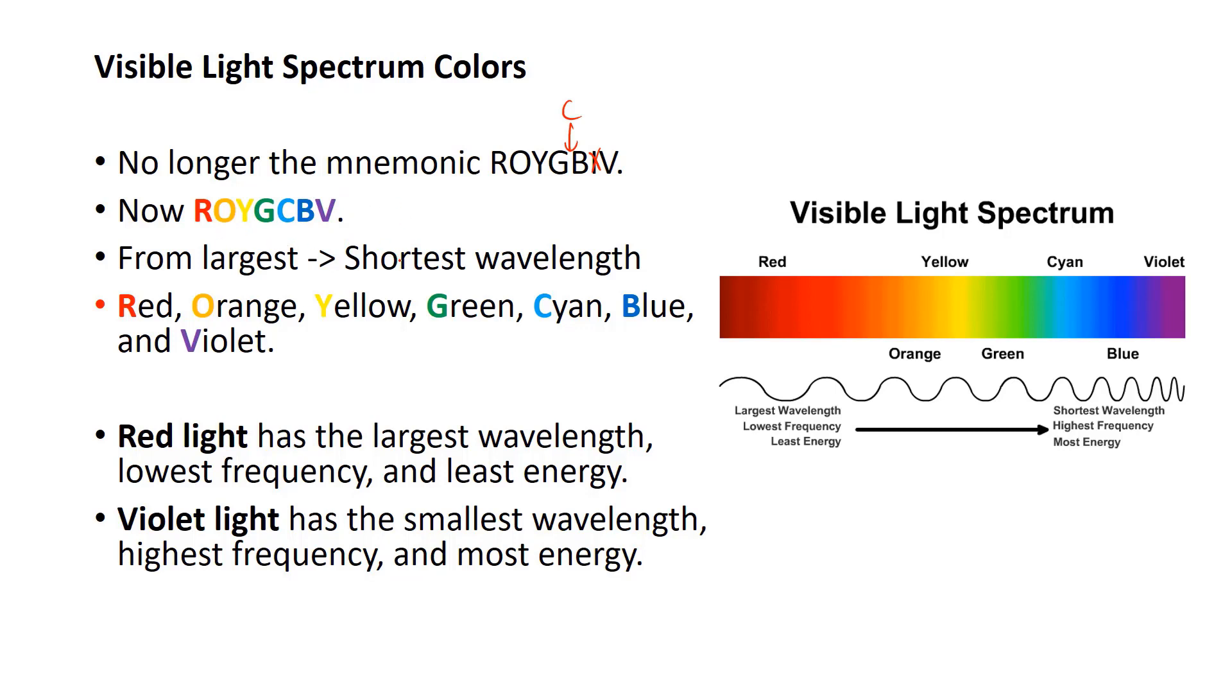And this goes from largest to shortest wavelength. So you get red, orange, yellow, green, cyan, blue, violet. And in that direction, it goes from largest wavelength, which has the lowest frequency, because those are always inverse of each other. And frequency goes with energy, so it also has the least energy.